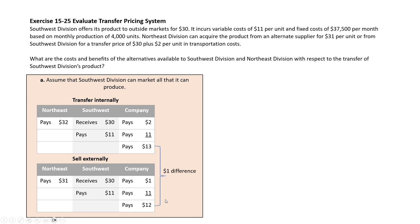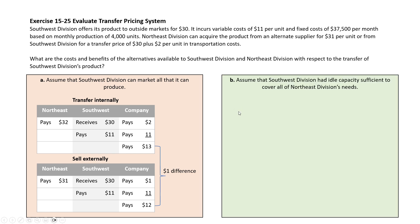So that's a $1 difference, and it's a net benefit for Southwest to sell externally to someone else rather than transfer to Northeast Division. You could have simplified this: it costs $31 to buy from someone else versus $32 to buy internally — a $1 difference. This shortcut will make more sense when we get to Part B.